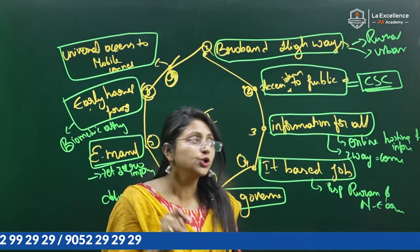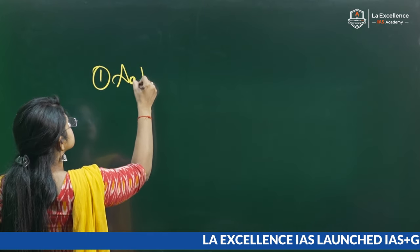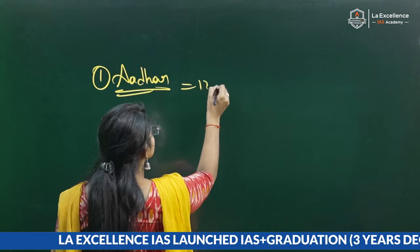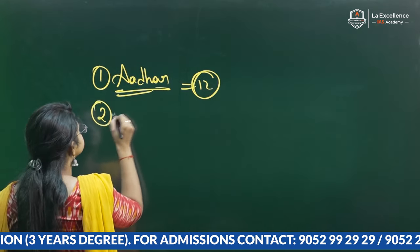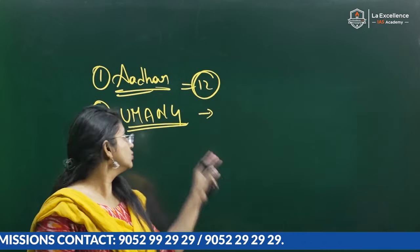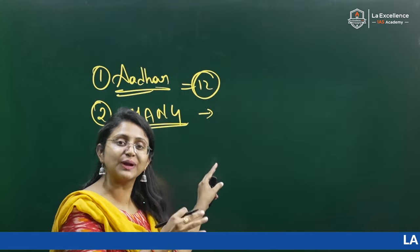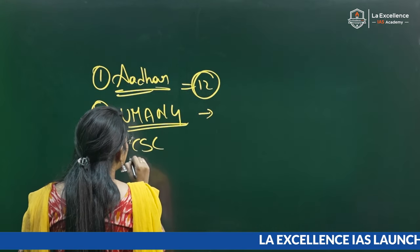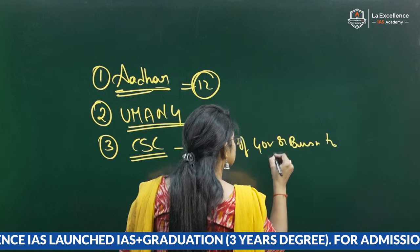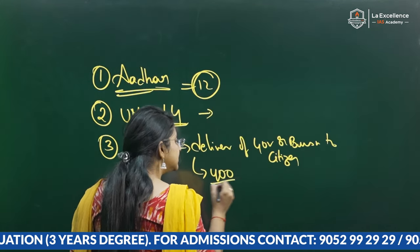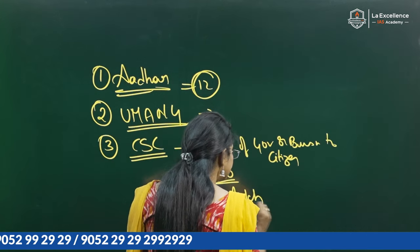Coming to the government initiatives — what did the government do to make Digital India accessible? The first initiative is Aadhaar, a 12-digit unique identification number given to citizens, accessible all over the country, helping in identification. The second is Umang — Unified Mobile Application for Governance-related services — through which citizens can access governance-related services digitally. The third is Common Service Centers, which deliver government and business services to citizens. There are more than 400 government services delivered through Common Service Centers, and over 5 lakh Common Service Centers are operating across the length of the country.